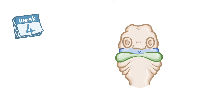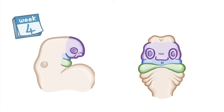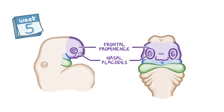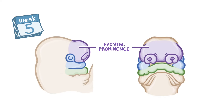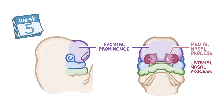Development of the face begins in week 4, when two patches of ectoderm on the frontal prominence start to proliferate, forming two thickenings known as the nasal placodes. During week 5, the mesodermal cells surrounding each nasal placode proliferate rapidly to form a horseshoe-shaped swelling. The inner half is called the medial nasal process, and the outer half the lateral nasal process. The region of the frontal prominence where these changes take place and the nose will develop is called the frontonasal process.